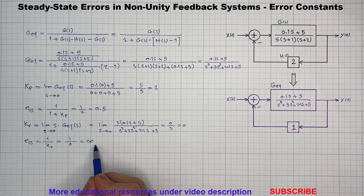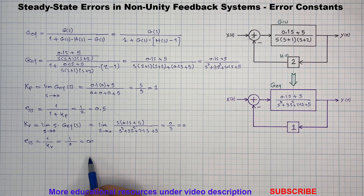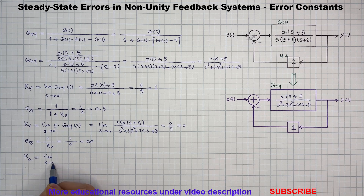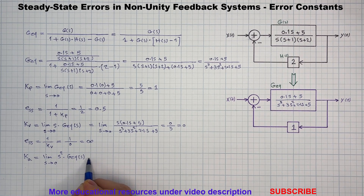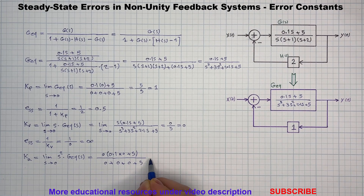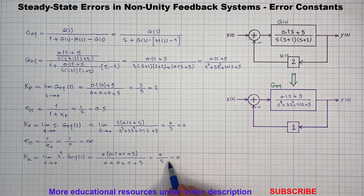It has an infinite steady-state error, meaning our system cannot track a ramp input. And finally, the acceleration error constant Ka for parabolic inputs. The denominator again goes to zero, and we get zero for Ka.